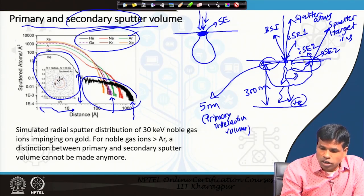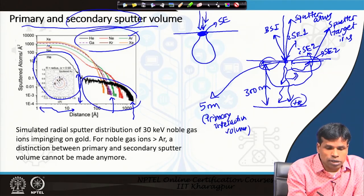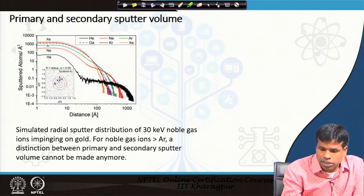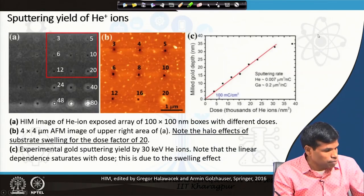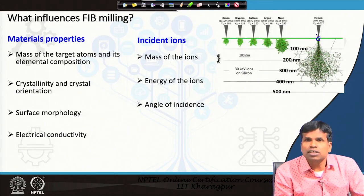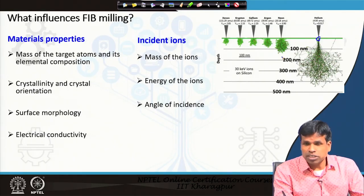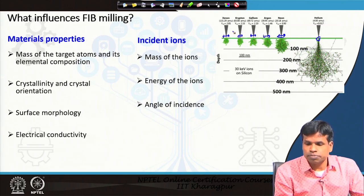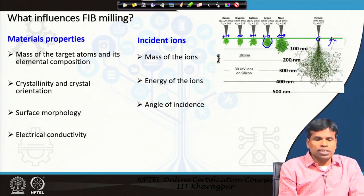This primary and secondary sputter volume distinction applies for helium. For argon and heavier atoms, because their mass and momentum are higher, there is only one merged interaction region. Helium gives a very small primary spot size, but as you increase the mass of the ions, the beam range becomes less, penetration depth decreases, and lateral spread increases. Above argon, only one type of interaction volume is observed.